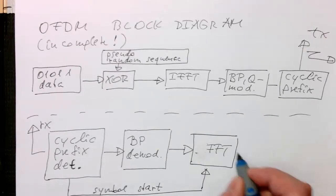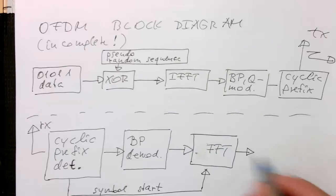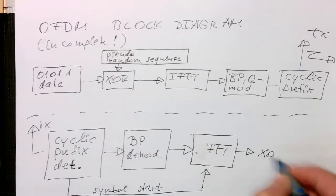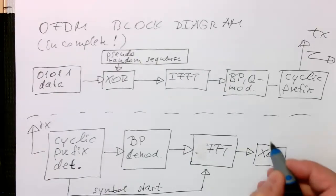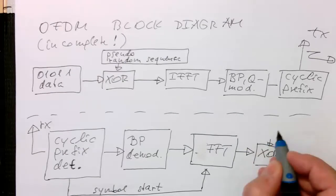So once we've got our data back in frequency coefficients, we do our XOR operation and we use the same pseudo-random sequence again what we use on the transmitter.